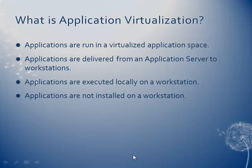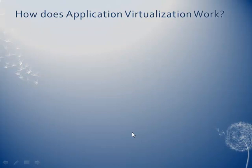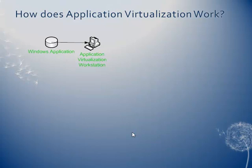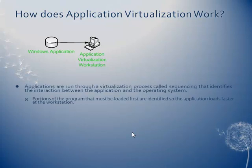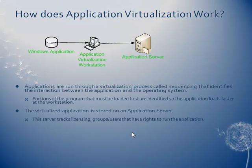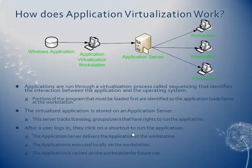But the applications are not installed on the workstation — this is huge. Basically, you have a Windows app and an application virtualization workstation, and the applications are run through a virtualization process called sequencing that identifies touch points between the application and the OS, what it hits in the registry and other things. It also identifies what portions of the program are loaded first so that when you go through sequencing, the applications will actually load faster. Then it's stored in an application server, which will typically track licensing groups and users that have access to that application, and then finally run on the workstations.